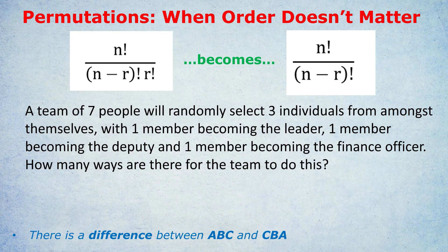A team of seven people will randomly select three individuals from amongst themselves, with one member becoming the leader, one member becoming the deputy, and one member becoming the finance officer. How many ways are there for the team to do this? In this case, it's kind of clear, isn't it, that we don't just randomly select three people from seven. No, each person has a different job. Person a being the leader, b being the deputy, and c being the finance officer is different to person c being the leader, b being the deputy, and a being the finance officer.